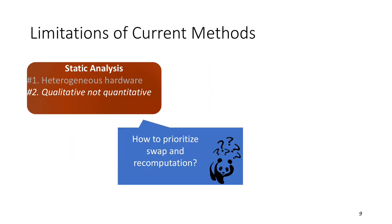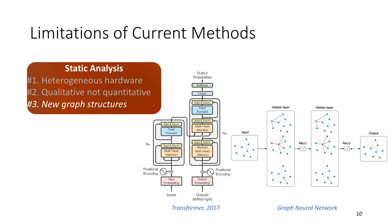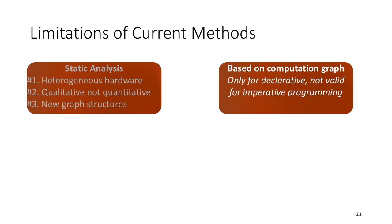Second, the static analysis is qualitative but not quantitative, which means it's difficult to prioritize the memory optimization candidates or make choices between swap and recomputation. Third, neural networks are continuously and rapidly evolving such as the transformer structure proposed by Google and graph neural network. They differ much with the convolutional neural network which makes a prior heuristic is not available for the new type networks.